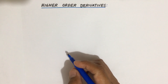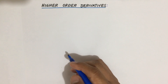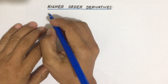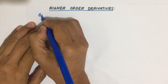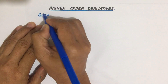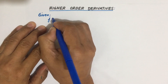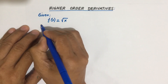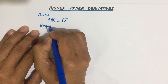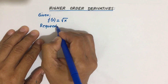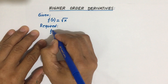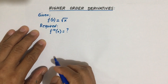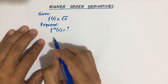Hello class. In this video we are going to focus on higher order derivatives. Let us solve some examples. For example, if you are given f(x) equal to the square root of x and you are asked to solve for the third derivative, f triple prime of x. So how would we solve this problem?